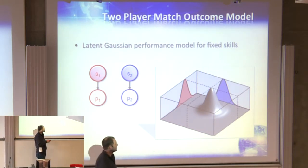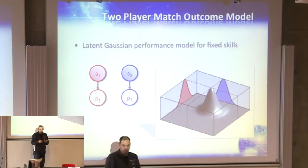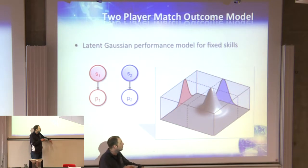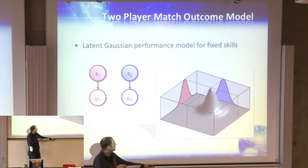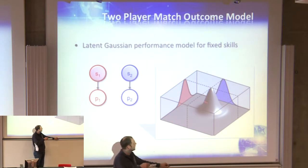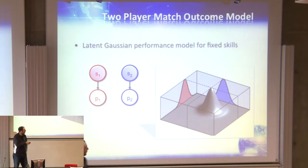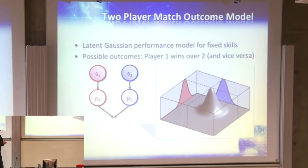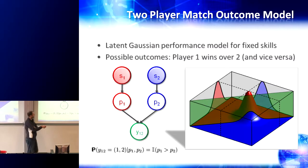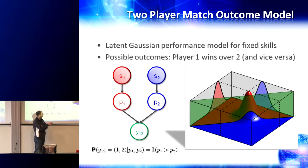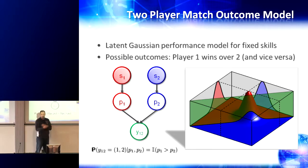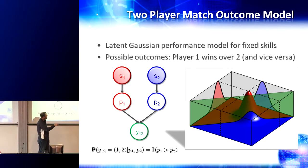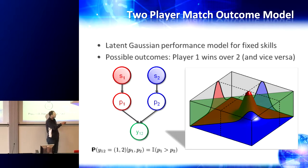A very simple model: performance is another latent score distributed around my skill (the blue one) and EY's skill (the red one), giving a joint 2D Gaussian distribution—that's the performance distribution. The skills are the means, and the variance is a fixed parameter. Given the performances, the probability of EY winning is how often the red performance is bigger than the blue. And how often the blue is bigger than the red is the probability that I win. Formally, this is just the event P1 > P2, which corresponds to an area under a 2D Gaussian.